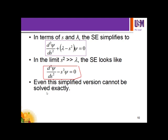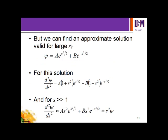However, even this simplified version cannot be solved exactly. We have to make an approximate solution. We can find an approximate solution valid for large s: ψ ≈ A·exp(s²/2) + B·exp(-s²/2). This is the general exponential solution, where the first term is a positive exponential and the second is a negative exponential.